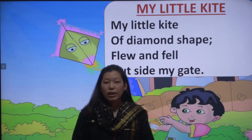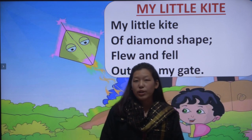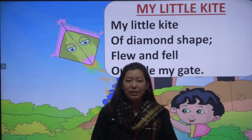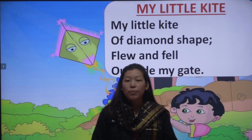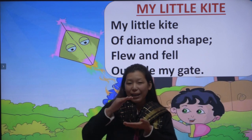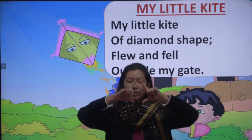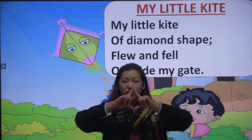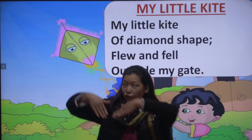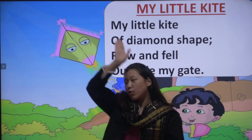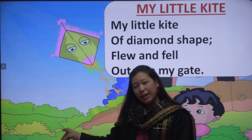So let's do it with action. So let's start. My little kite. My little kite of diamond shape flew and fell outside the gate.